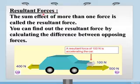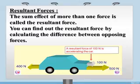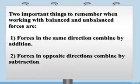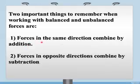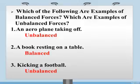Now, resultant force: the sum of the effect of more than one force is called the resultant force. You can find the resultant force by calculating the difference between the opposing forces. For example, on one side there is 500 newtons and on the other side 400 newtons, so 500 minus 400 gives a resultant force of 100 newtons. Forces in the same direction are combined by addition, and forces in opposite directions are combined by subtraction.